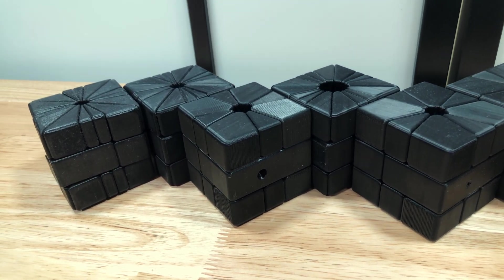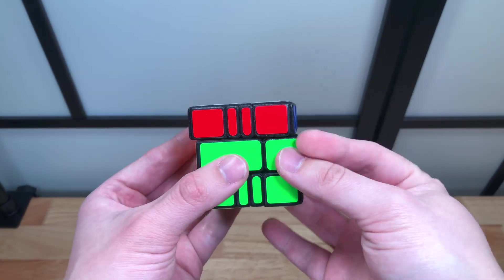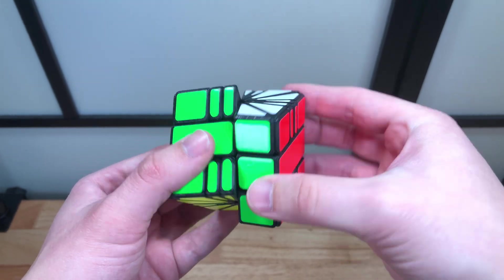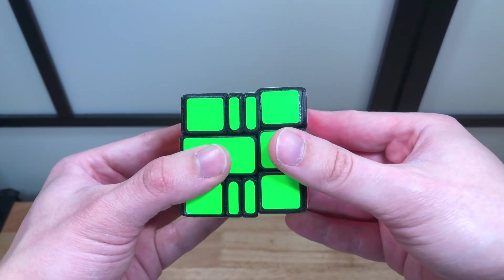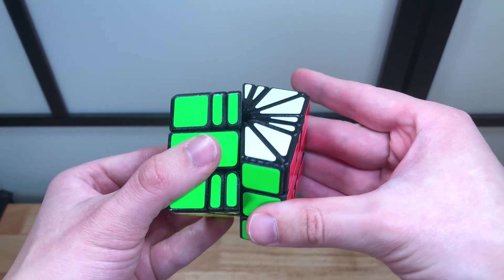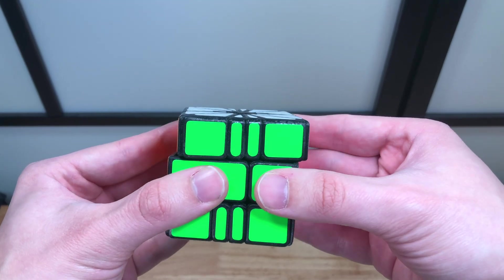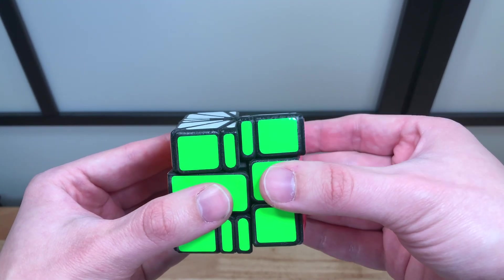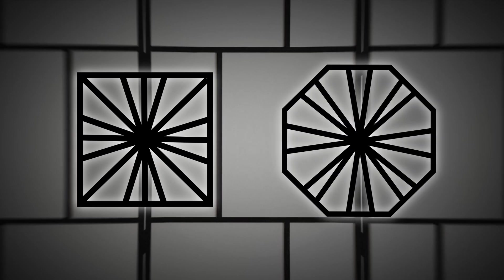The culmination of these tests is this Square-3, which turns very smoothly and has excellent corner cutting. I'll still tweak the design later, but this iteration is what I'll be adapting for the Octagon-1. Now, if you're extra perceptive, you may have noticed that from a geometric standpoint, the Square-3 and Octagon-1 actually have the exact same pieces.